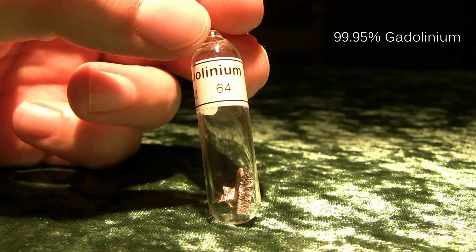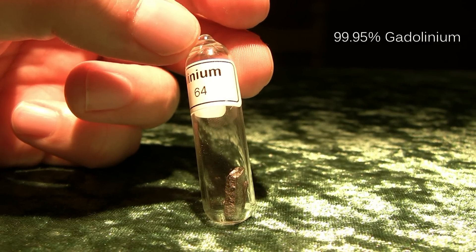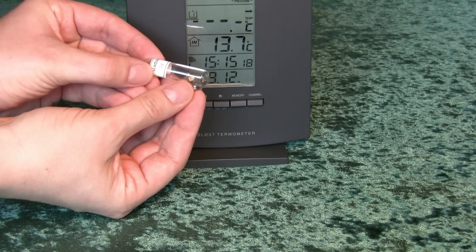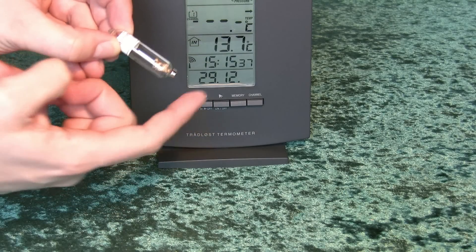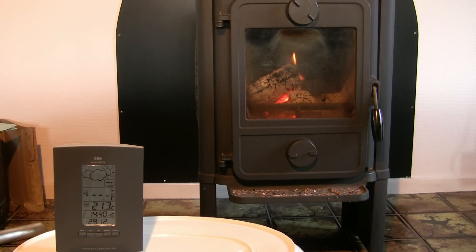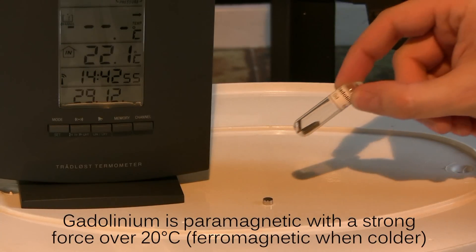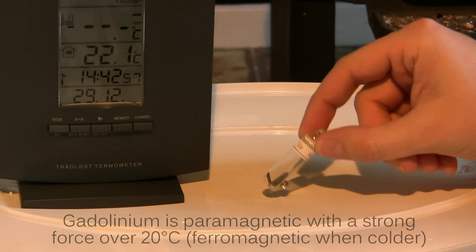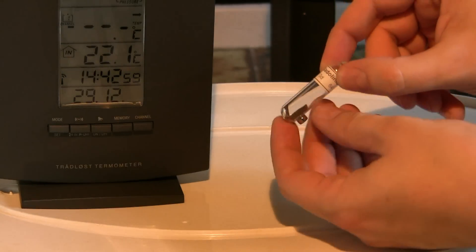Gadolinium is actually also ferromagnetic but only below 20 degrees Celsius. Above 20 degrees Celsius it turns strongly paramagnetic. This means it still attracts the magnet but it can no longer be a magnet in itself.